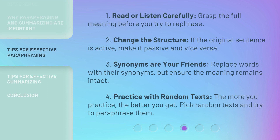Tips for effective paraphrasing: 1. Read or listen carefully — grasp the full meaning before you try to rephrase. 2. Change the structure — if the original sentence is active, make it passive and vice versa. 3. Synonyms are your friends — replace words with their synonyms, but ensure the meaning remains intact. 4. Practice with random texts — the more you practice, the better you get. Pick random texts and try to paraphrase them.